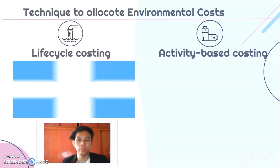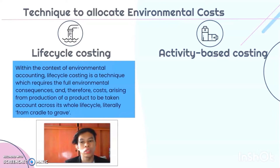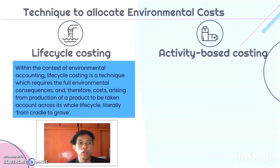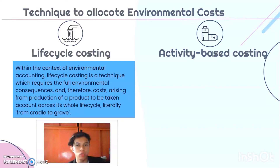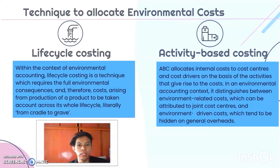The third technique is life cycle costing. In an environmental accounting context, life cycle costing requires the full environmental consequences and costs arising from the production of a product to be taken into account across its whole life cycle — literally from the cradle to the grave. This includes costs from material acquisition, production, packaging, distribution, marketing, and after-sale service, all of which are considered in determining environmental costs.